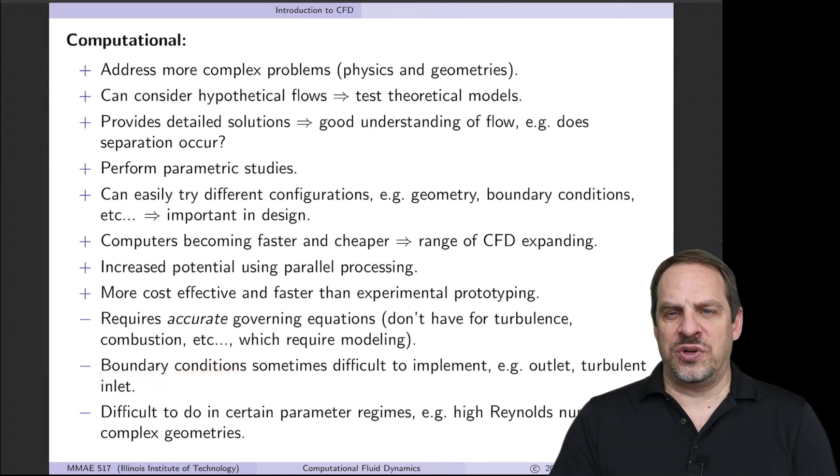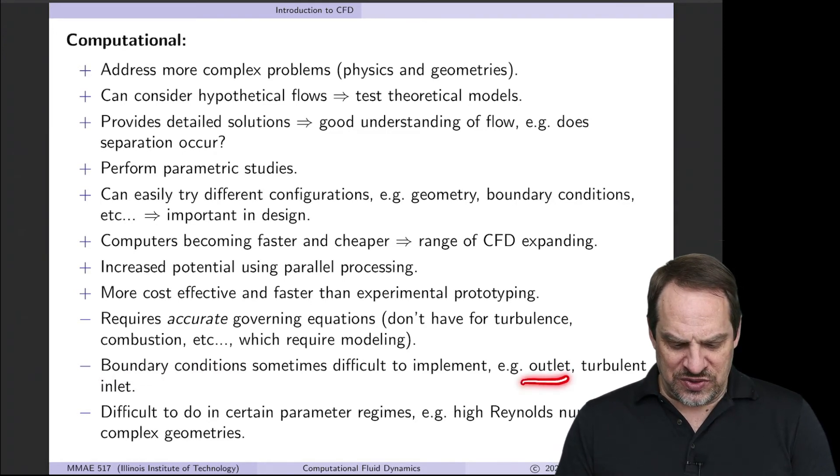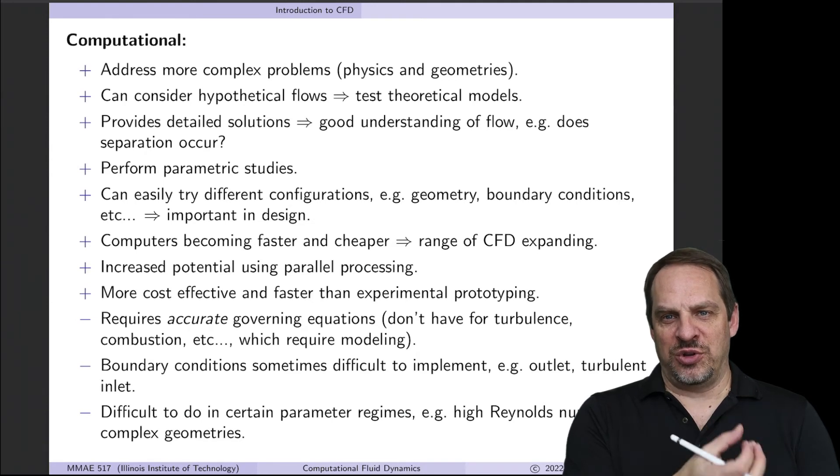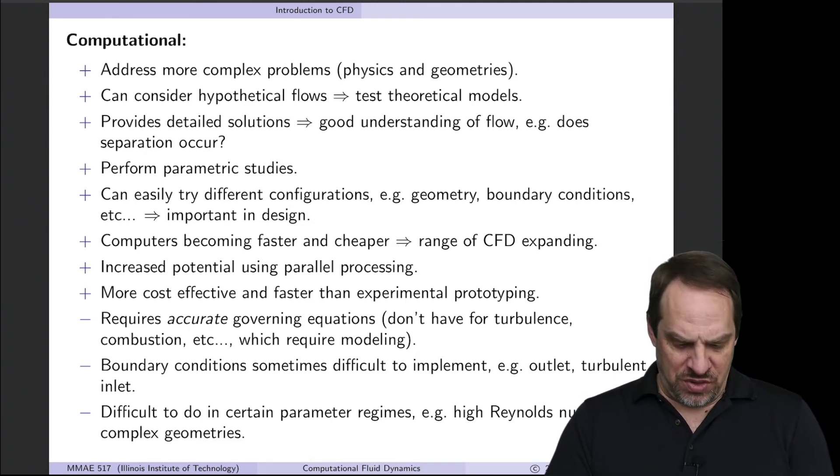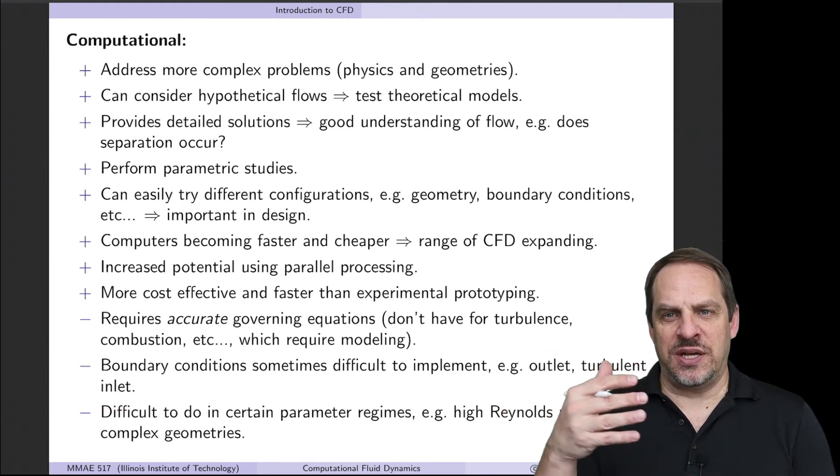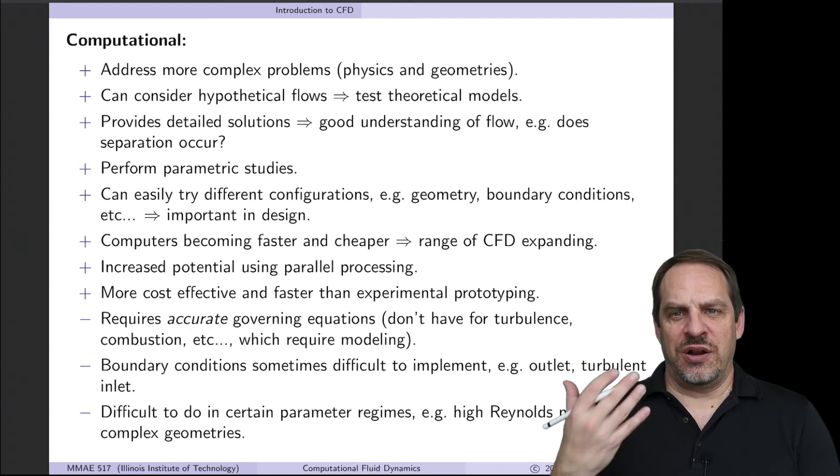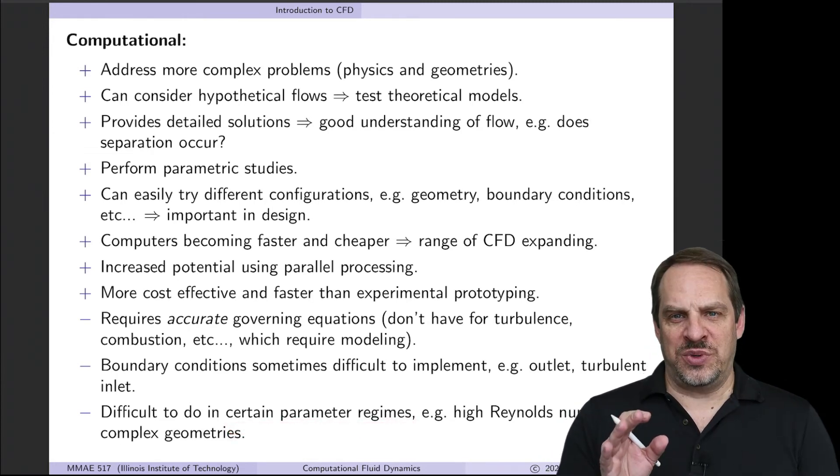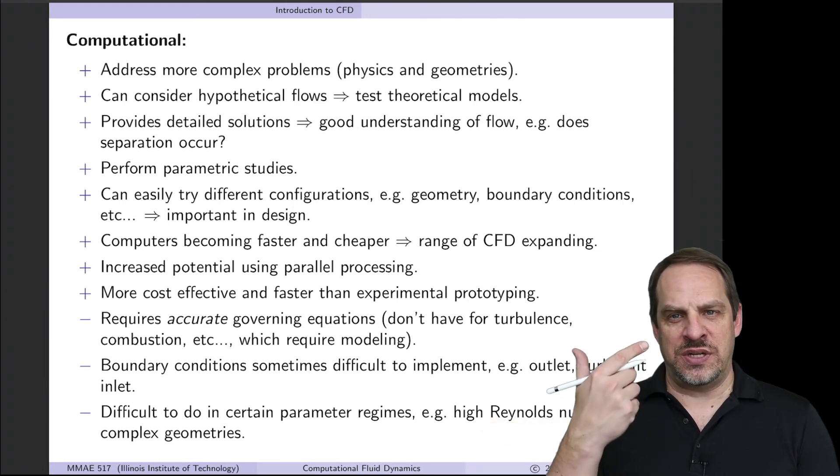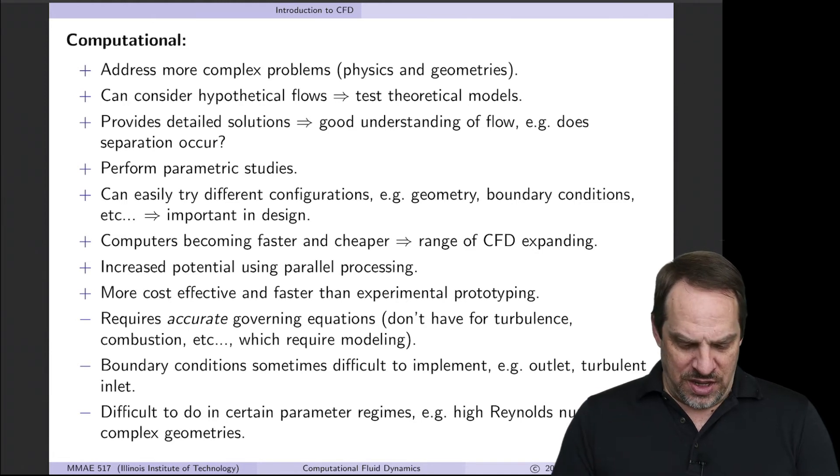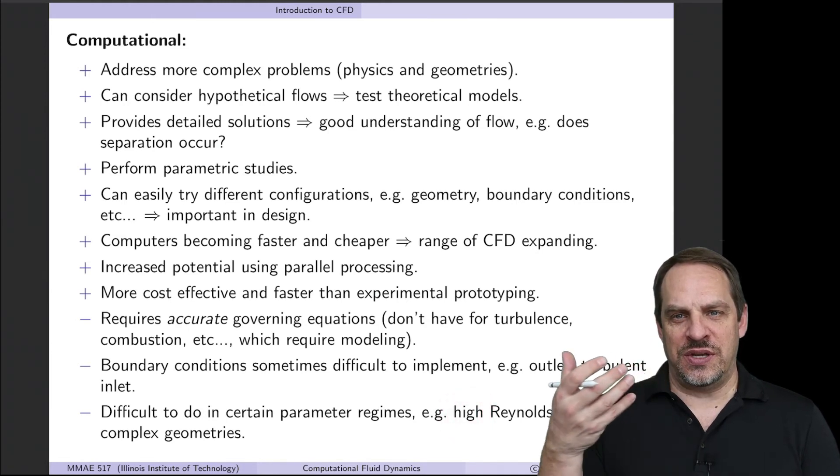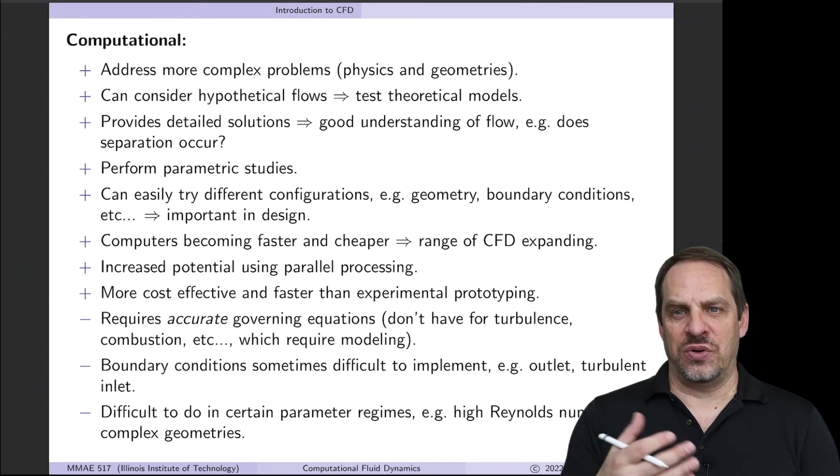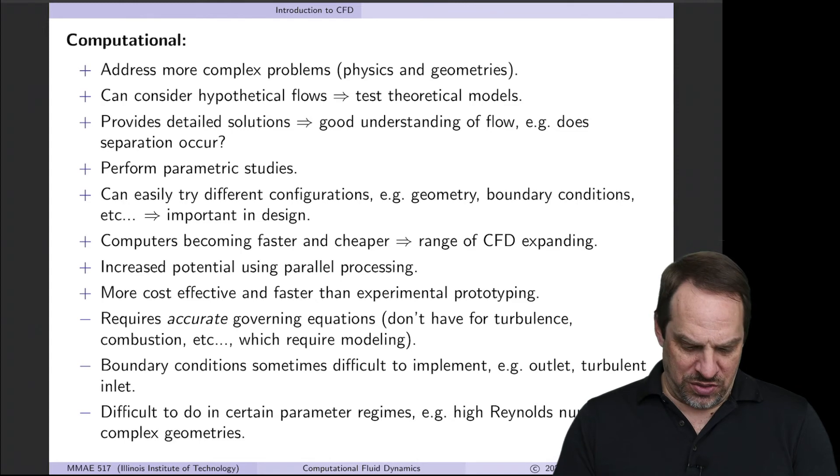Boundary conditions can be notoriously problematic. In a fluid mechanics context, again, think of something as simple as an outlet. This is just the end of a pipe or an outlet to your domain. You're solving the flow. What is the velocity? What are the pressures at the outlet? Oftentimes, we just don't know. Turbulent inlet. So you have an inlet. You have a turbulent flow coming into your domain. What are the characteristics of that turbulence? That's not always well characterized. It's difficult to do certain parameter regimes. So in fluid mechanics, we have the non-dimensional Reynolds number, which characterizes velocities, sizes, and viscosities of the problem in the fluid. If those Reynolds numbers become very large, then that increases the impact and influence of the non-linear terms in the Navier-Stokes equations as the Reynolds number increases. So more non-linearity, more difficulty from a numerical perspective.